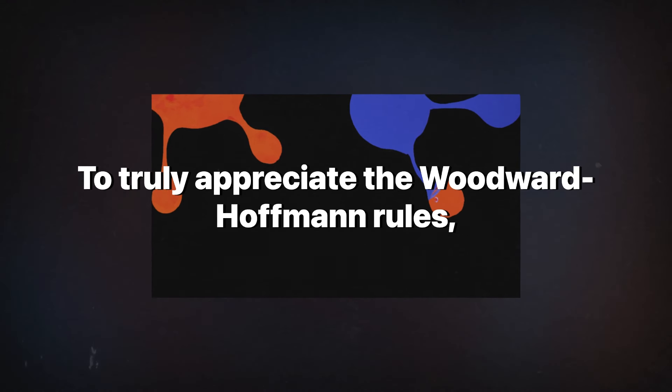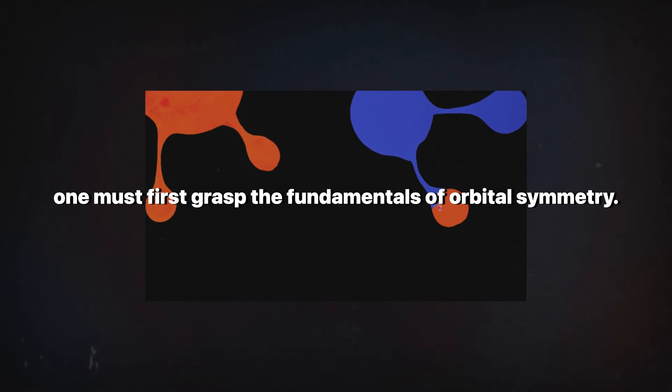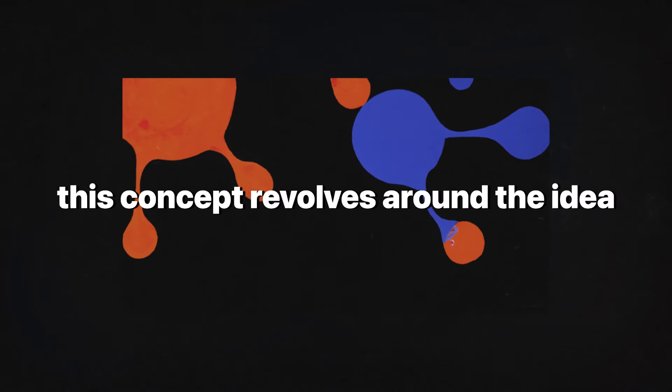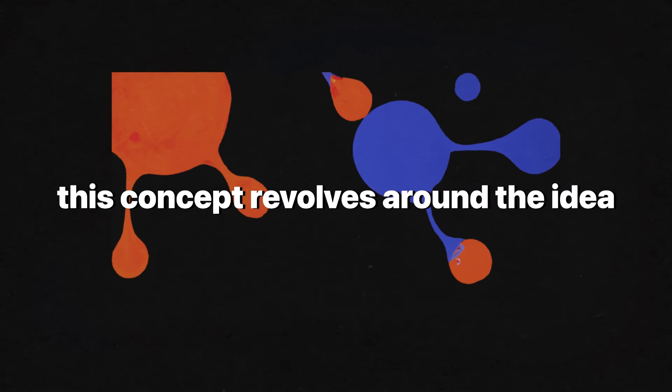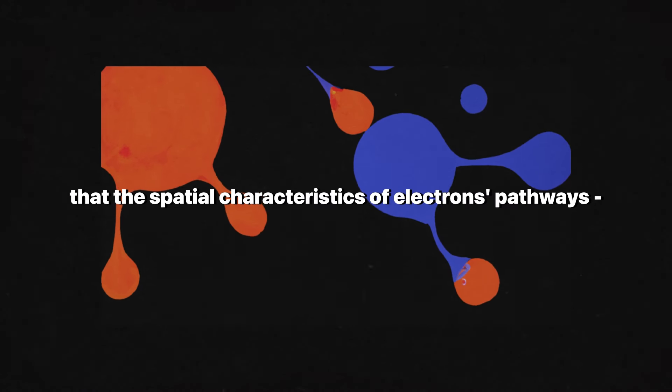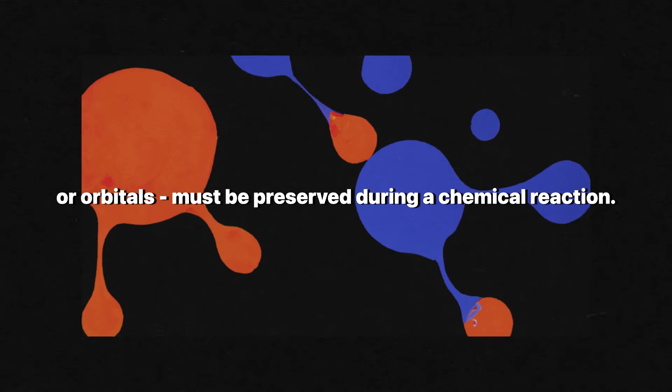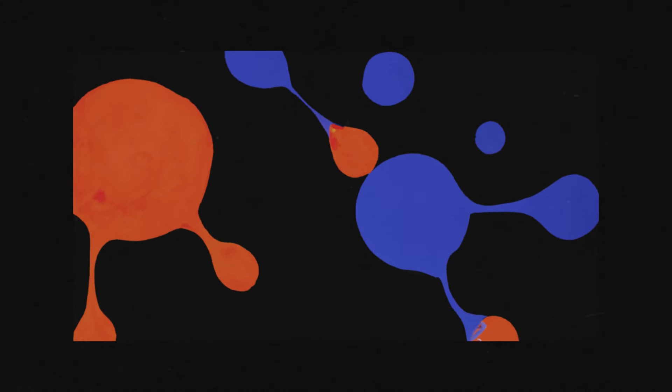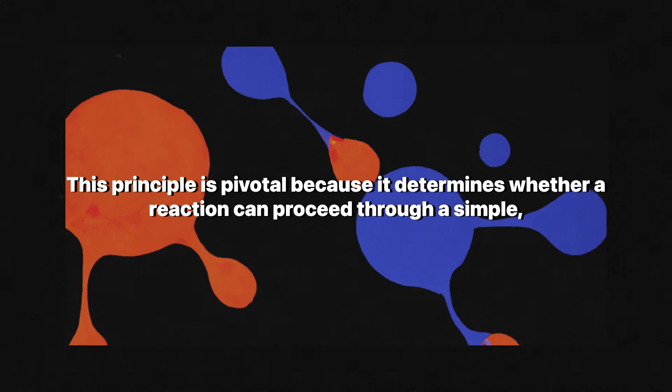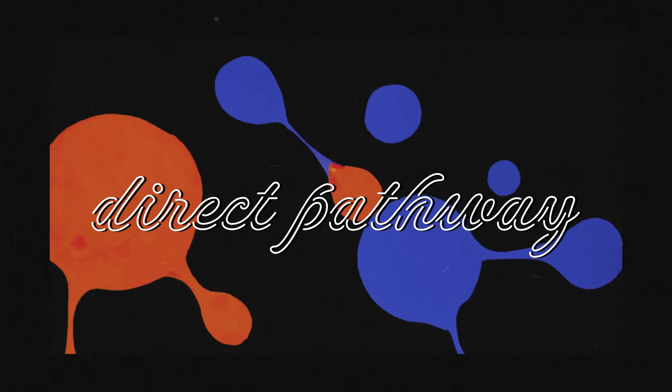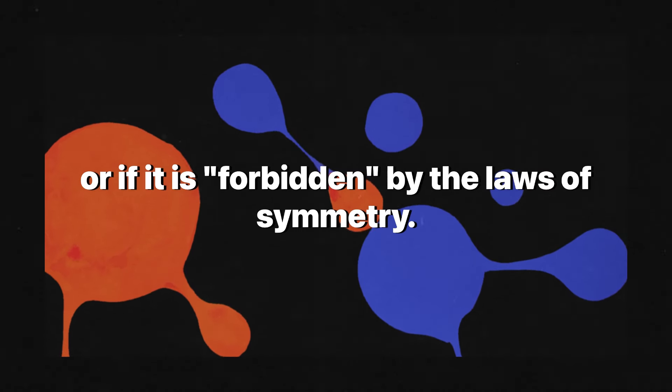To truly appreciate the Woodward-Hoffman rules, one must first grasp the fundamentals of orbital symmetry. At its core, this concept revolves around the idea that the spatial characteristics of electrons' pathways, or orbitals, must be preserved during a chemical reaction. This principle is pivotal because it determines whether a reaction can proceed through a simple, direct pathway, or if it is forbidden by the laws of symmetry.